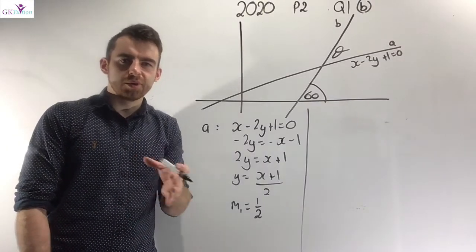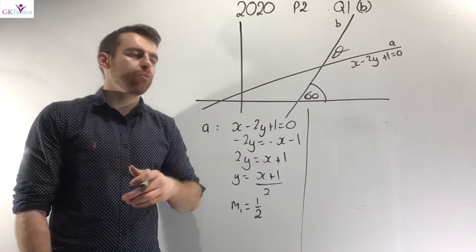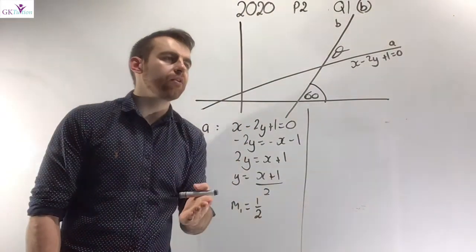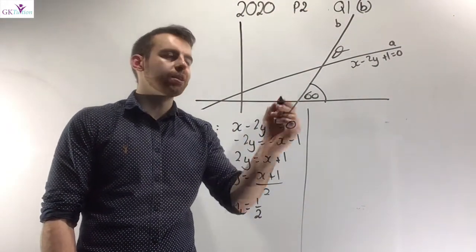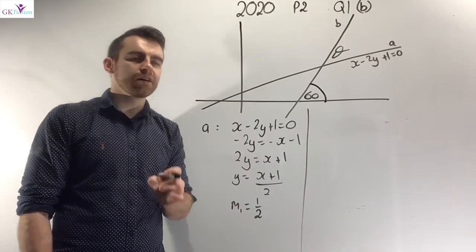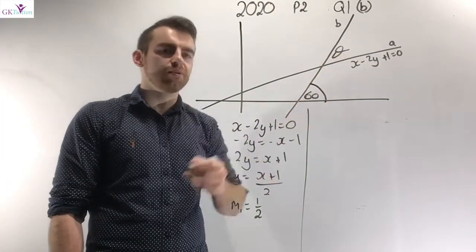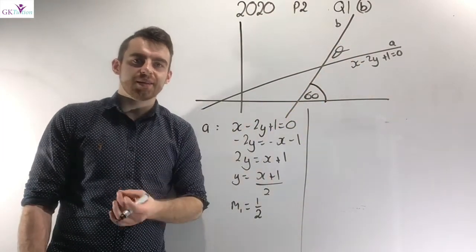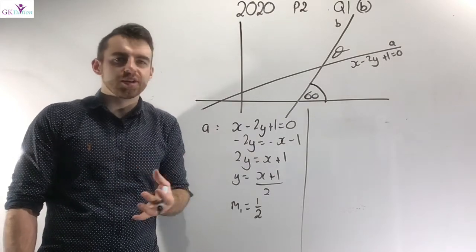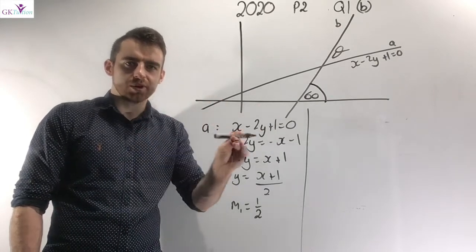Question 1 Part B. There are two different ways of doing this question — I want to talk about both but I'll do the easier way first. We're given the equation of line A: x minus 2y plus 1 equals 0. For line B, we're not told the equation but we know the angle it makes with the positive sense of the x-axis is 60 degrees. The angle between the two lines is labeled theta. There's a formula on page 19 in the maths tables: tan of the angle equals plus or minus m1 minus m2 over 1 plus m1 times m2. To use it, I need the slopes of both lines.